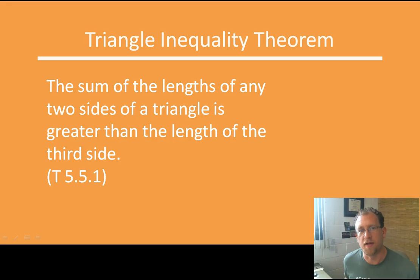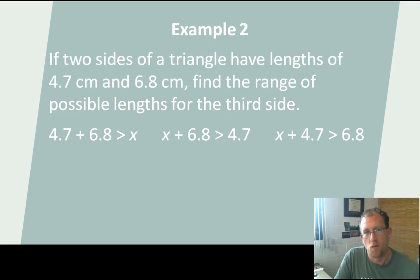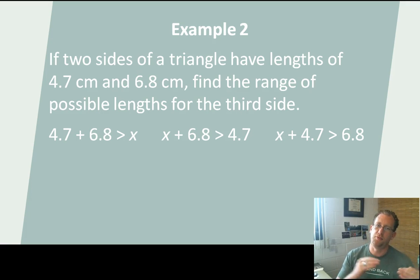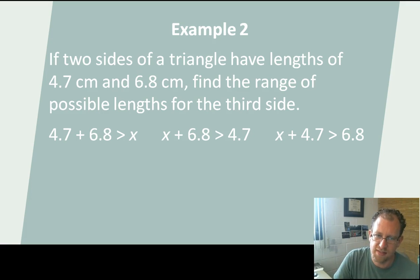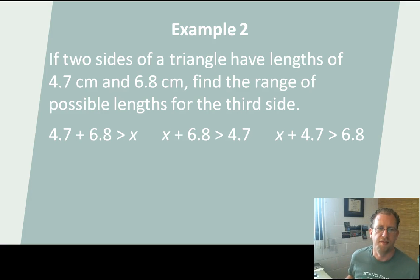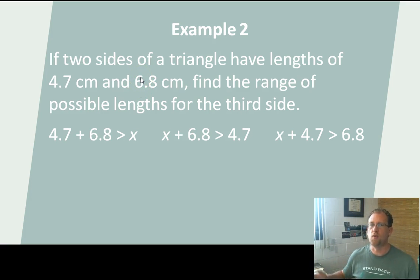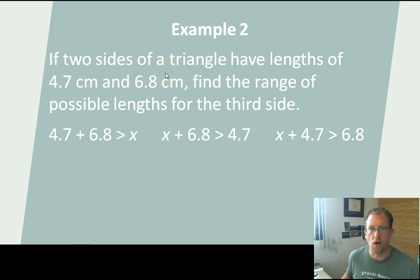Let's look at an example. If I have two sides of a triangle and I want to know what the range is for the possible third side, I can set up three inequality statements and solve for the unknown, and I'll know how big or small my side length has to be. So if two sides of a triangle have lengths of 4.7 cm and 6.8 cm, find the range of possible lengths for the third side. The third side has to be big enough that it plus 4.7 is bigger than 6.8, and small enough that 4.7 plus 6.8 is bigger than it. So we have to set up these inequalities. Now, 4.7 plus 6.8 is greater than x — these two have to be greater than the third side.